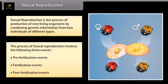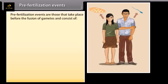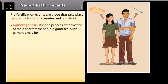Pre-fertilization events are those events that take place before the fusion of gametes and consist of gametogenesis — the process of formation of male and female haploid gametes. Such gametes may be isogametes or heterogametes.